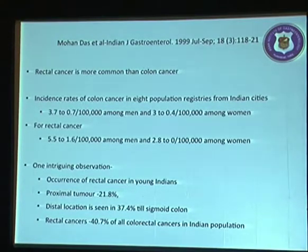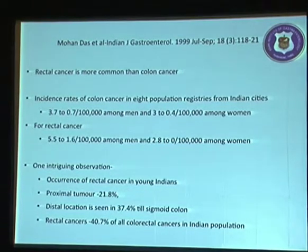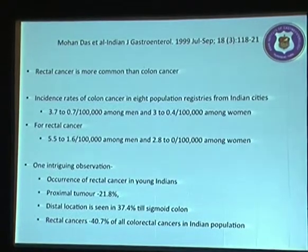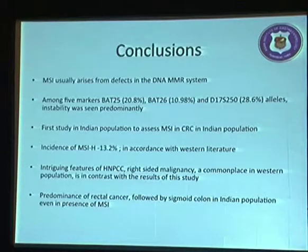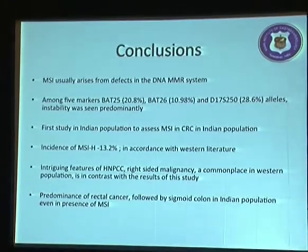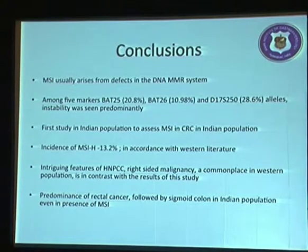The only prior published Indian study is by Mohandas et al., which showed rectal cancer as the most common location, occurring in the rectum in 40% and sigmoid in 37% of cases. To conclude, microsatellite instability usually arises from defects in the DNA mismatch repair system, and five markers are used for assessment. This study is the first in the Indian population to assess microsatellite instability, and it demonstrates that rectal cancer followed by sigmoid is the predominant location even in the presence of microsatellite instability in the Indian population.